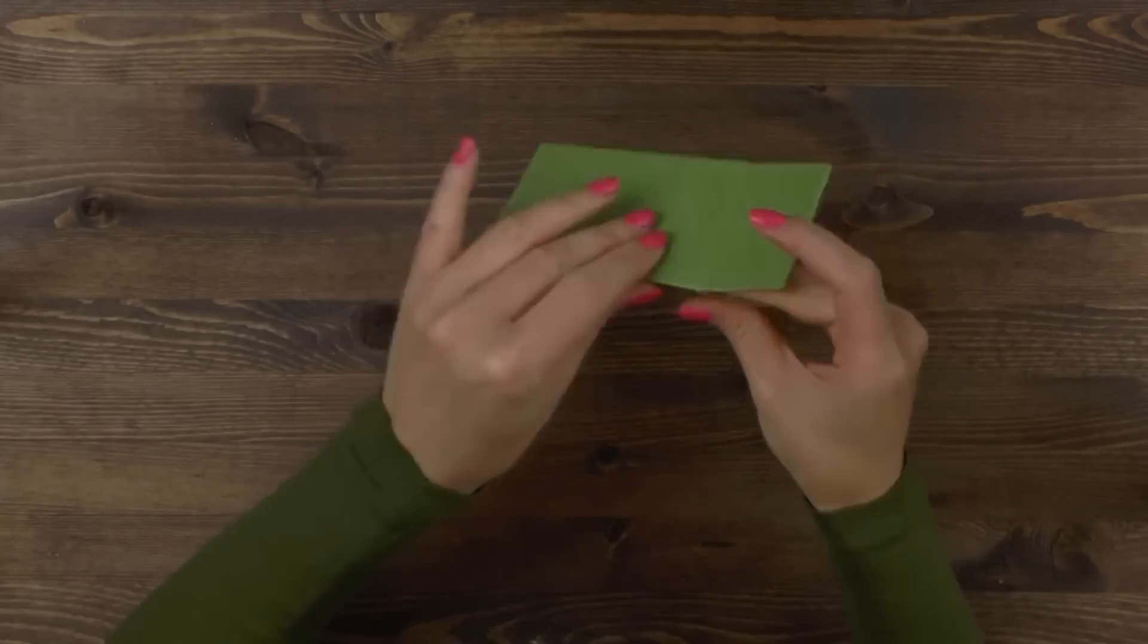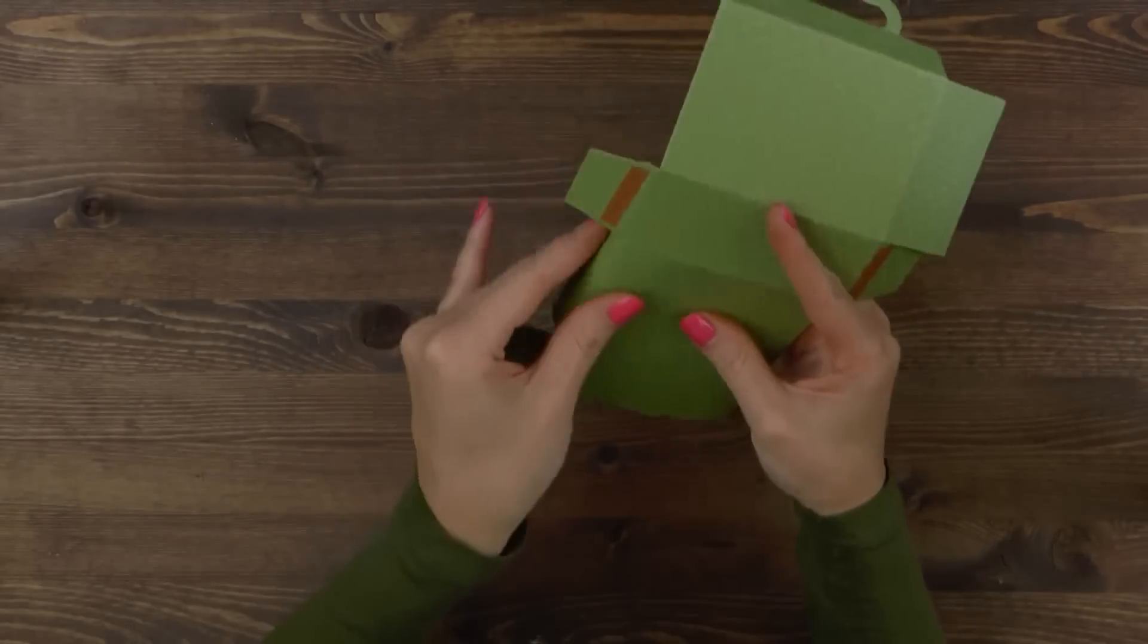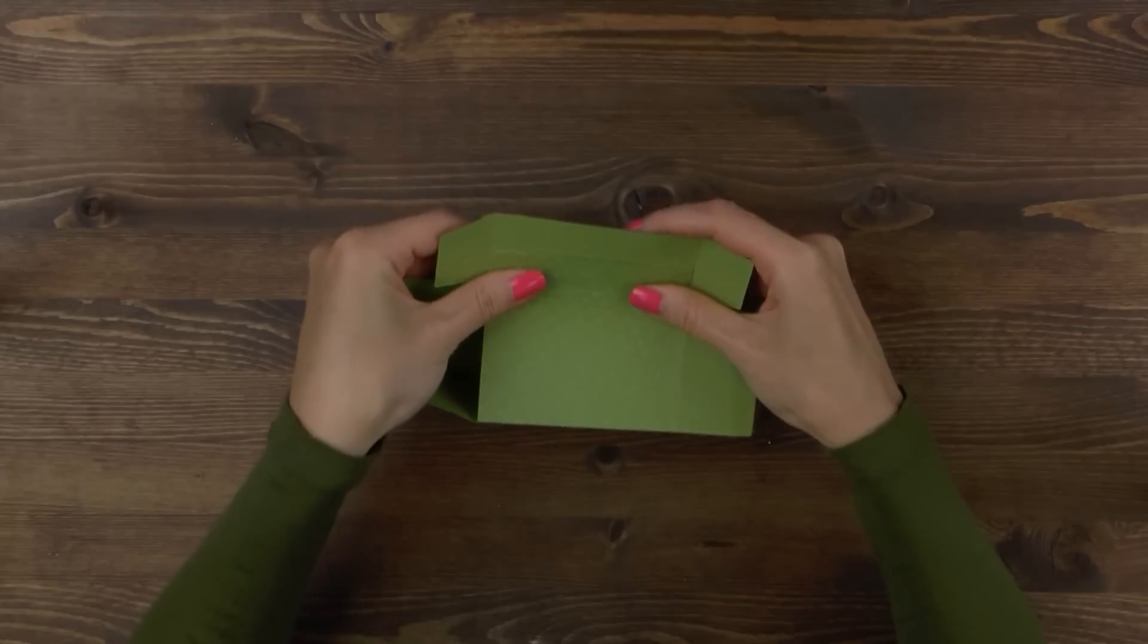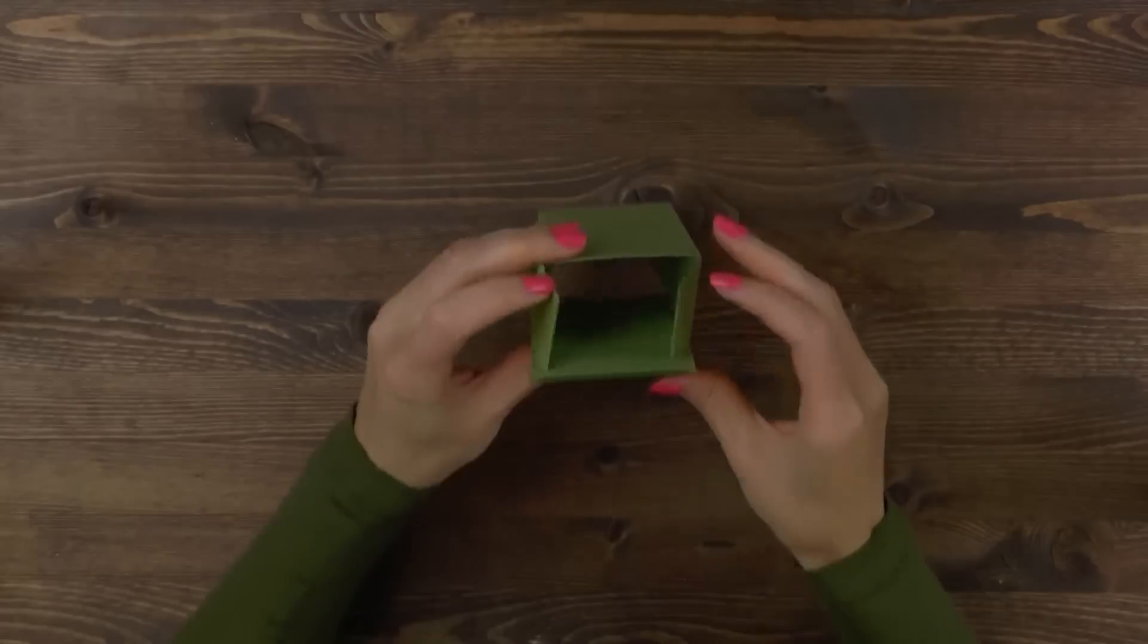Fold on all the tabs and all score lines. Insert the handle into the opening like so and close both sides.